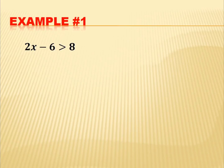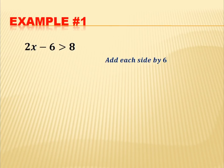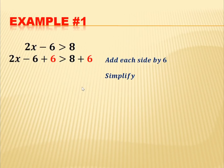Example number one: 2x minus 6 is greater than 8. We are going to add 6 to each side: 2x minus 6 plus 6 is greater than 8 plus 6. Simplifying, negative 6 plus 6 is 0, so we get 2x is greater than 14.